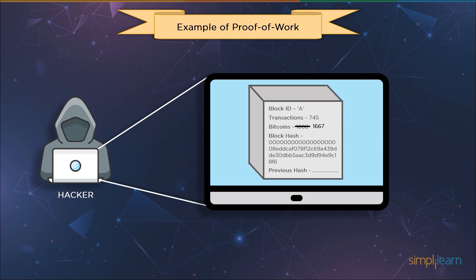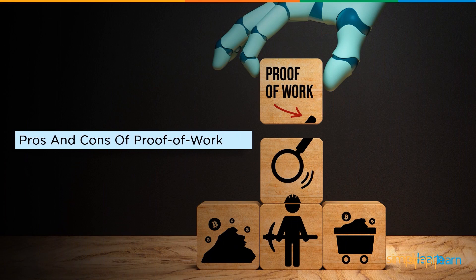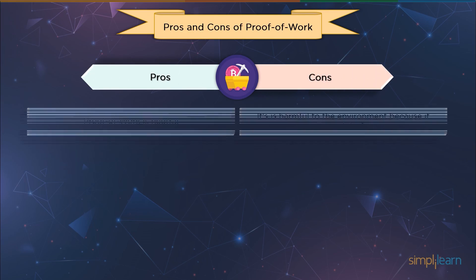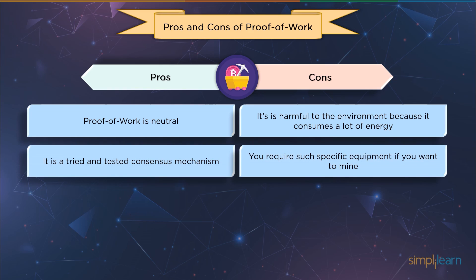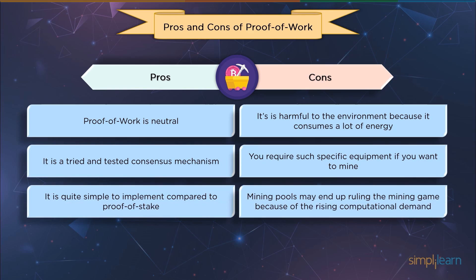Now let's look at some pros and cons of proof-of-work. First, proof-of-work has no bias — block incentives let you move from having no crypto to having a positive balance, and you can start without any crypto at all. But proof-of-work is harmful to the environment because it consumes a lot of energy. Second, proof-of-work is a tested consensus method that has long maintained the security and decentralization of Bitcoin and Ethereum, though mining-related equipment is so sophisticated that it requires a significant initial investment. Third, it is more straightforward to implement than proof-of-stake, but as computational requirements rise, mining pools may come to dominate the industry, posing problems of centralization and security.